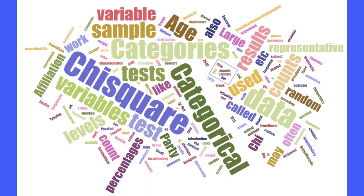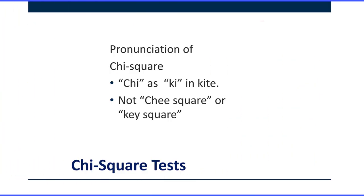Hi, I'm Dr. Don, and I'm going to give you an overview of Chi-square test. Let's start with pronunciation of Chi-square — it's K-I as in kite, not Chi or Ki-square, it's Chi-square.